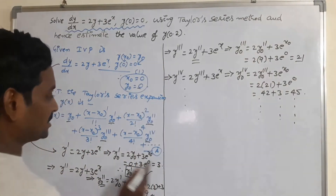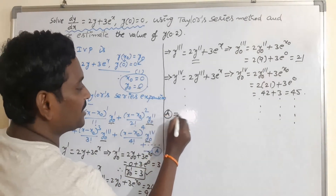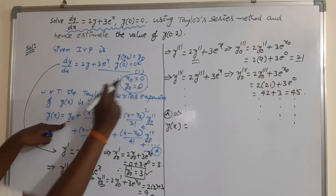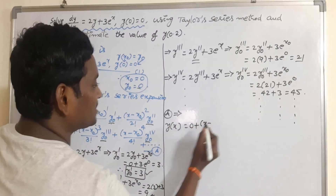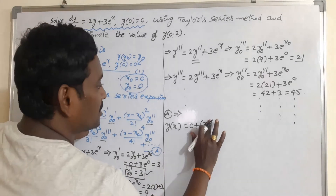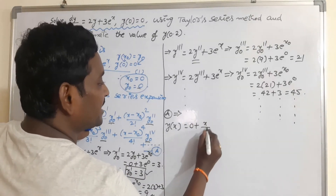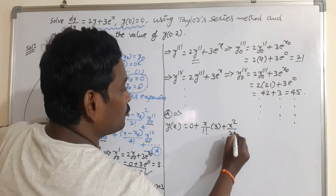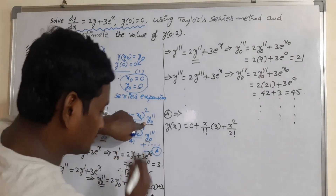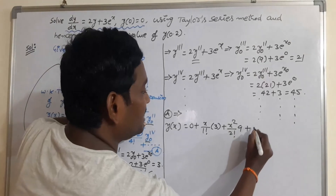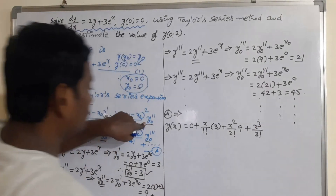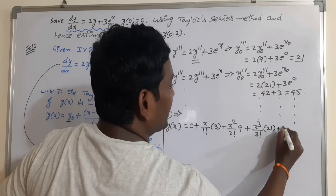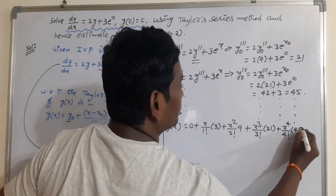Substitute all values into the Taylor series formula A. y(x) = y₀ + x/1! · y₀' + x²/2! · y₀'' + x³/3! · y₀''' + x⁴/4! · y₀''''. Since x₀ = 0, this becomes: y(x) = 0 + 3x + (9/2)x² + (21/6)x³ + (45/24)x⁴ + ...